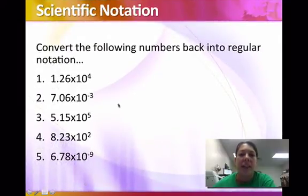Convert the following numbers back into regular notation. They're giving us the scientific and want us to go back into just the regular notation. So 1.26 times 10 to the 4th. I want to look at this. Since it's positive, that means I had a number that was greater than 1 to start with. So my decimal needs to come back. I need to make it a bigger number.